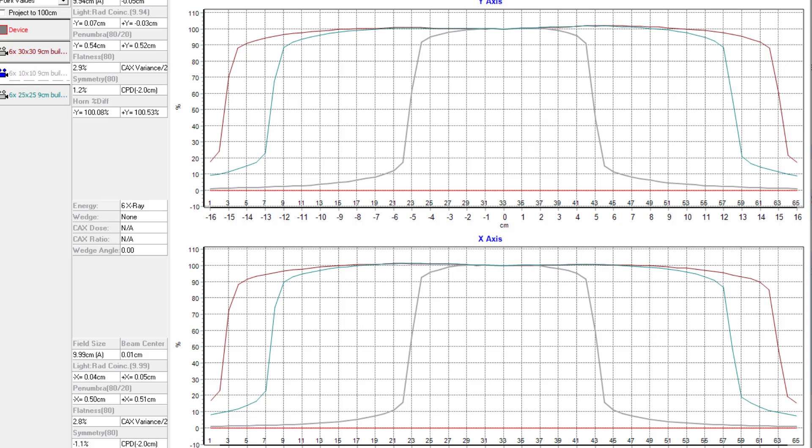Symmetry, they specify less than 2%. For electrons, it's different. Symmetry is still 2%, but the flatness can be as high as 5.4%.